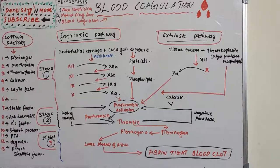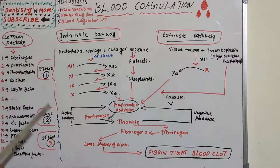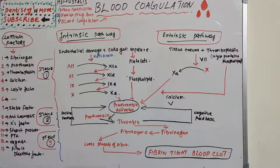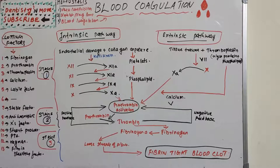The third stage is coagulation of blood. In vasoconstriction, immediately after injury the blood vessel constricts and decreases the loss of blood from the damaged portion. The blood vessels are cut, the endothelium is damaged, and there is exposure of the collagen fibers. When the damage happens, platelets come into action and adhere to this collagen and get activated.